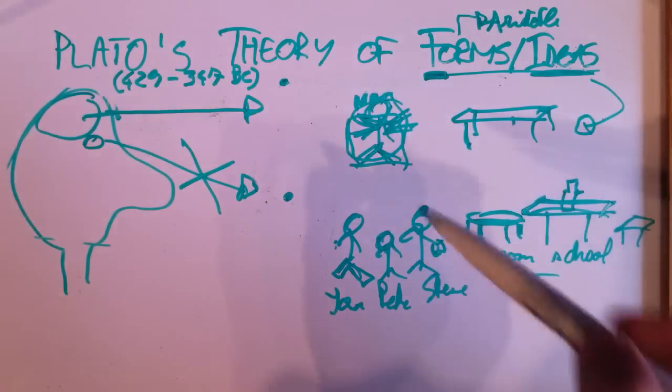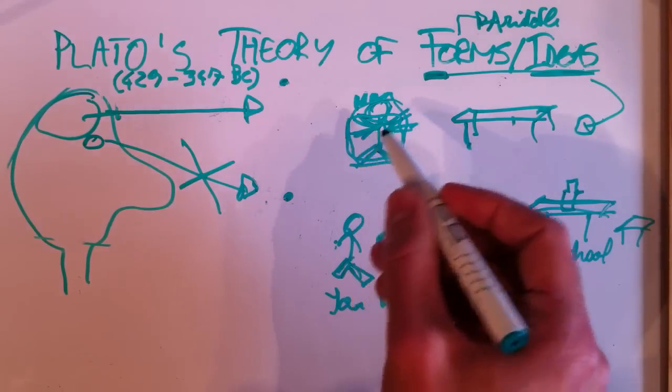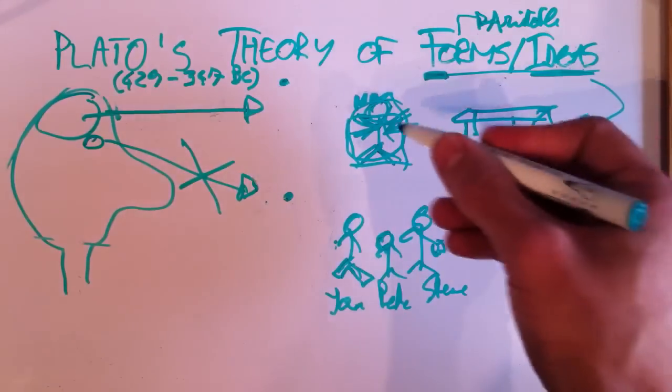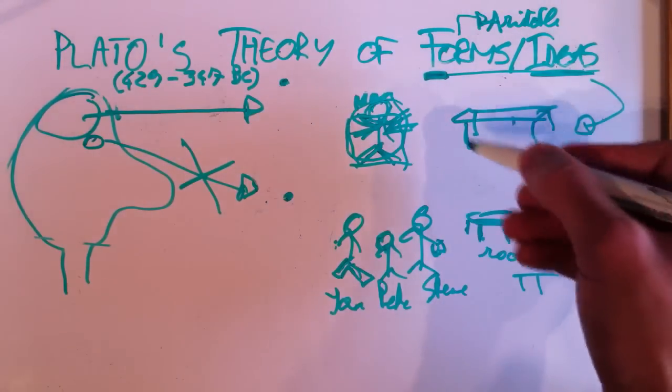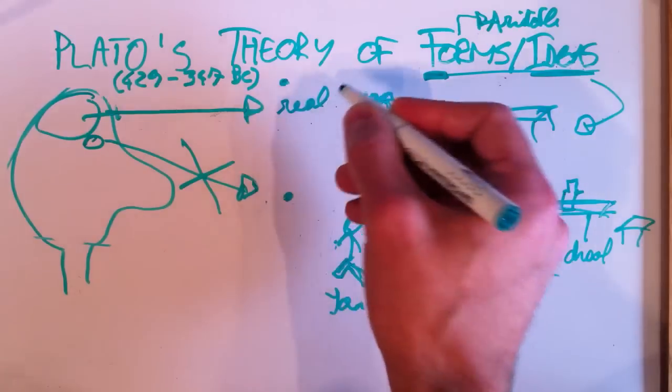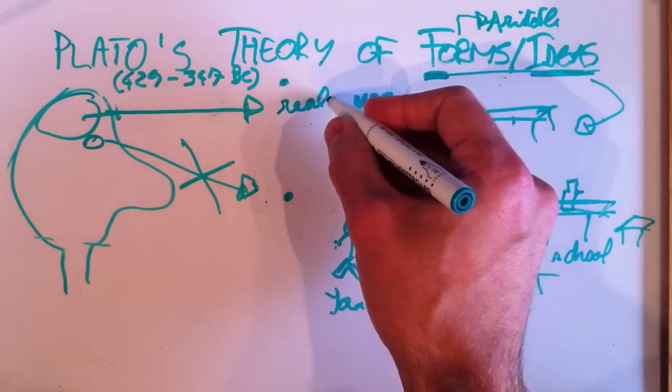do universals exist? And there Plato clearly says that they do exist. They're real. Something like man, something like table, it's real. It's real. They really exist. And therefore, Plato is a realist.